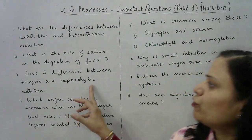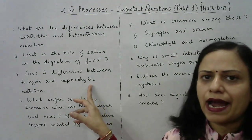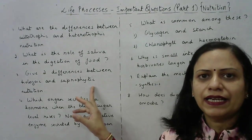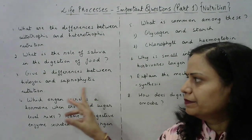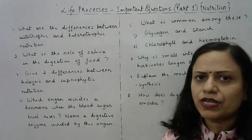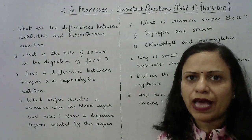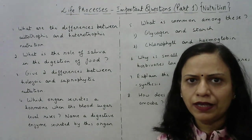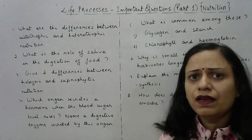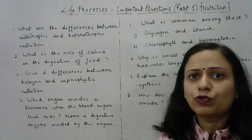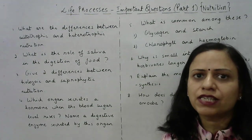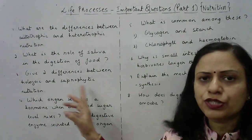The next question: give two differences between holozoic and saprophytic mode of nutrition. This has been discussed in detail in lecture number 1. In holozoic nutrition, an organism takes in complex food and then breaks it down inside the body. In saprophytic nutrition, an organism takes in already digested food from outside. This is the major difference. You will have to write at least three points of difference between these two.